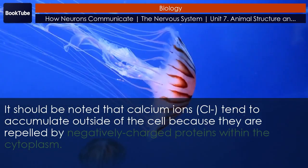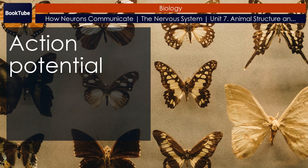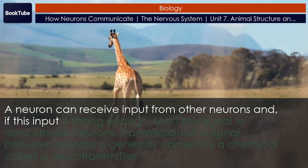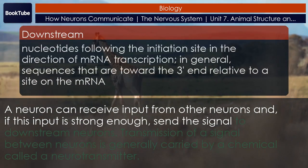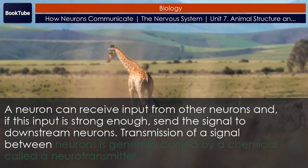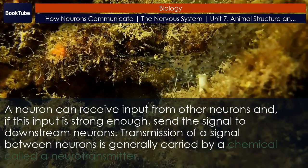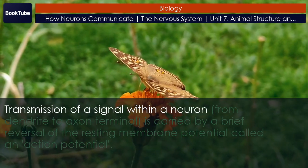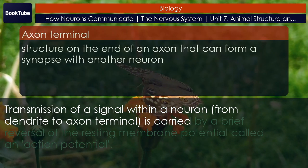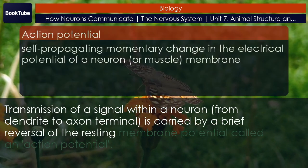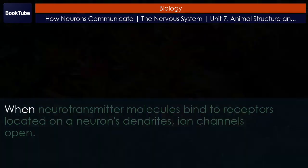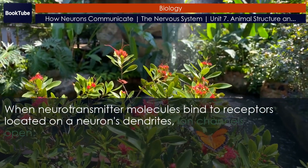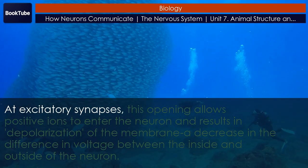The action potential. A neuron can receive input from other neurons and, if this input is strong enough, send the signal to downstream neurons. Transmission of a signal between neurons is generally carried by a chemical called a neurotransmitter. Transmission of a signal within a neuron from dendrite to axon terminal is carried by a brief reversal of the resting membrane potential called an action potential. When neurotransmitter molecules bind to receptors located on a neuron's dendrites, ion channels open.